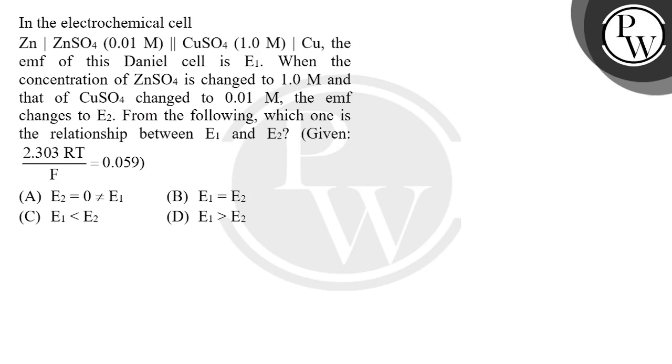Hello guys, let's first read the question. In the electrochemical cell, Zn-ZnSO4 concentration is 0.01M, CuSO4 is 1.0M plus Cu. The EMF of this Daniel cell is E1. When the concentration of ZnSO4 is changed to 1.0M and that of CuSO4 changed to 0.01M, the EMF changes to E2.